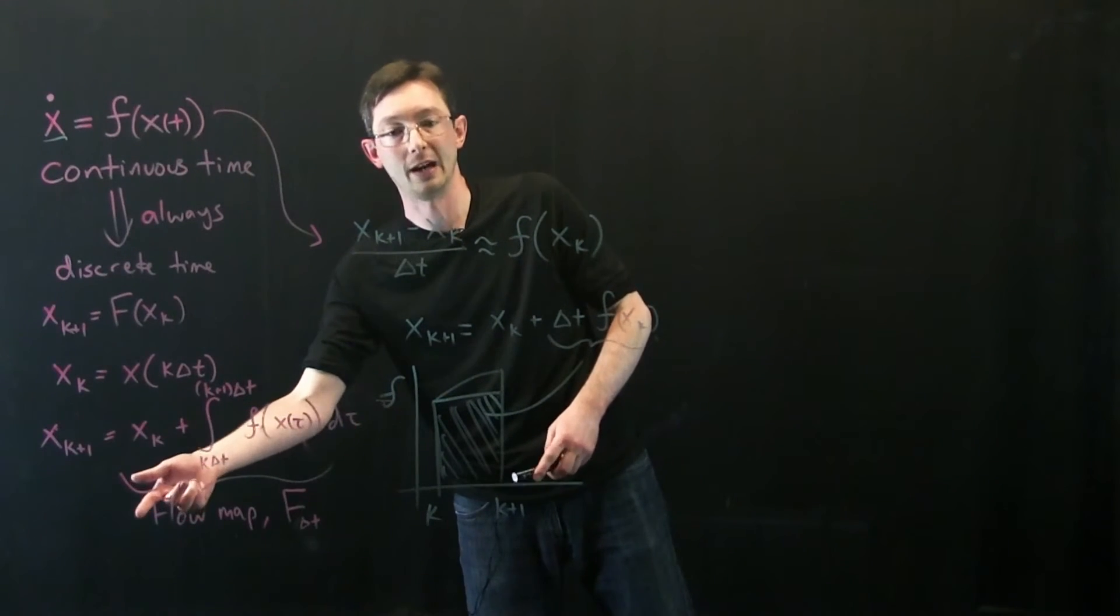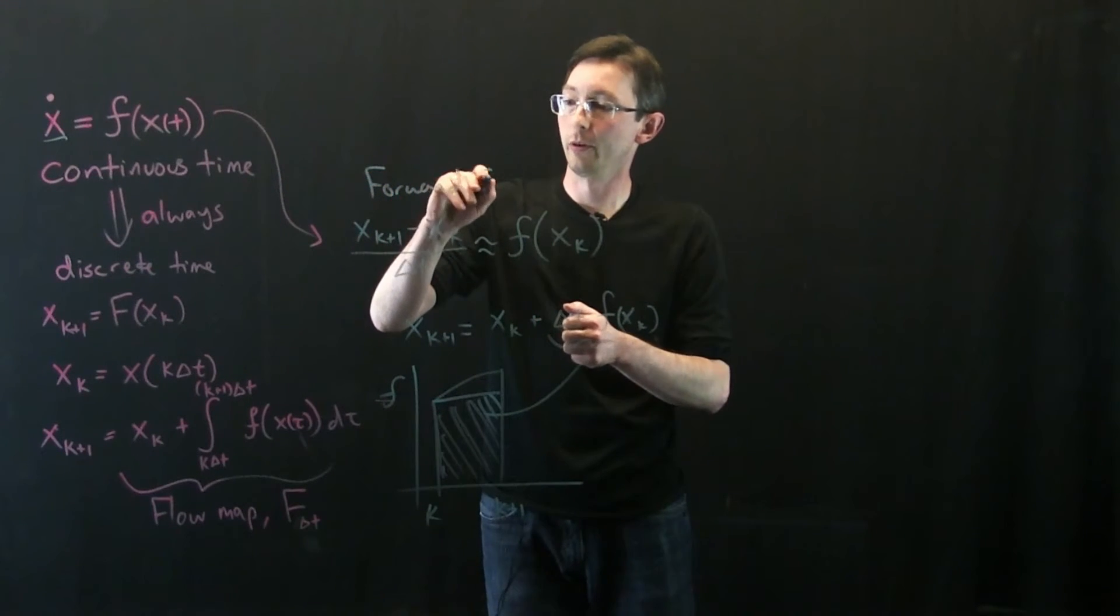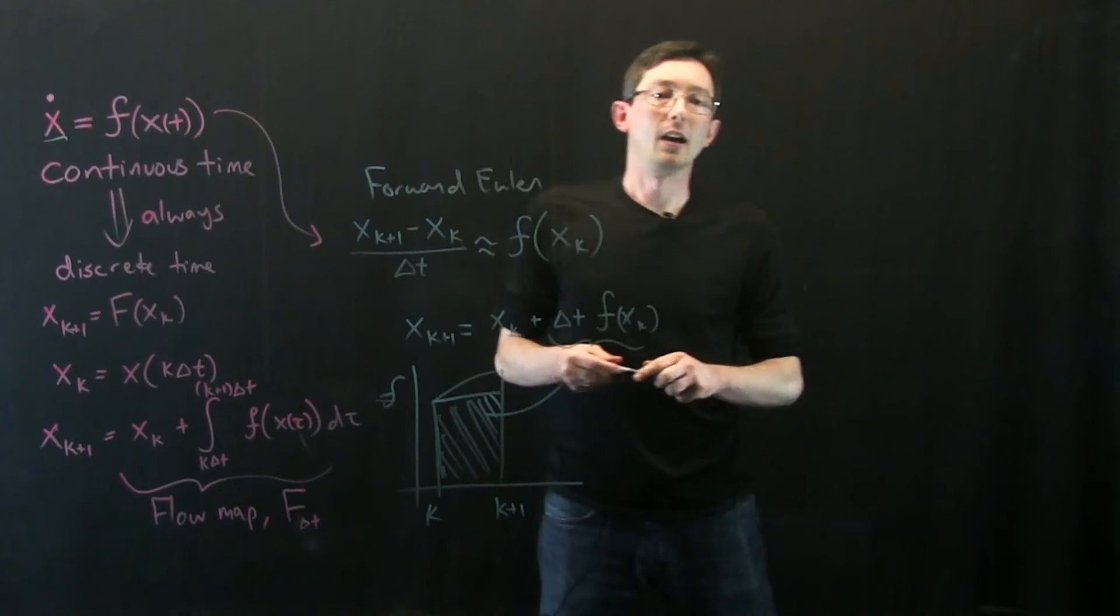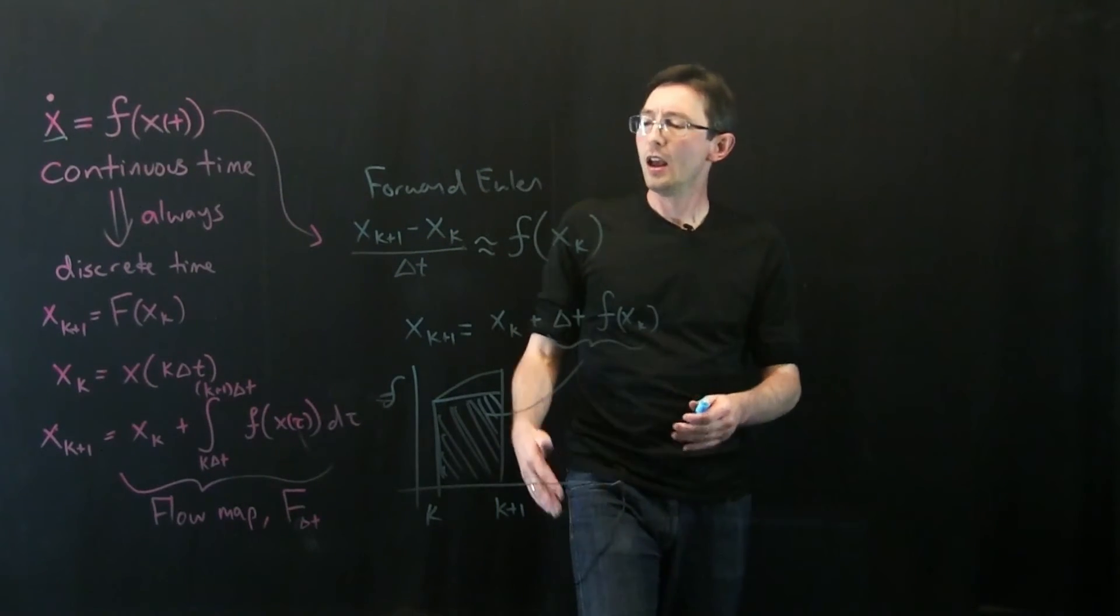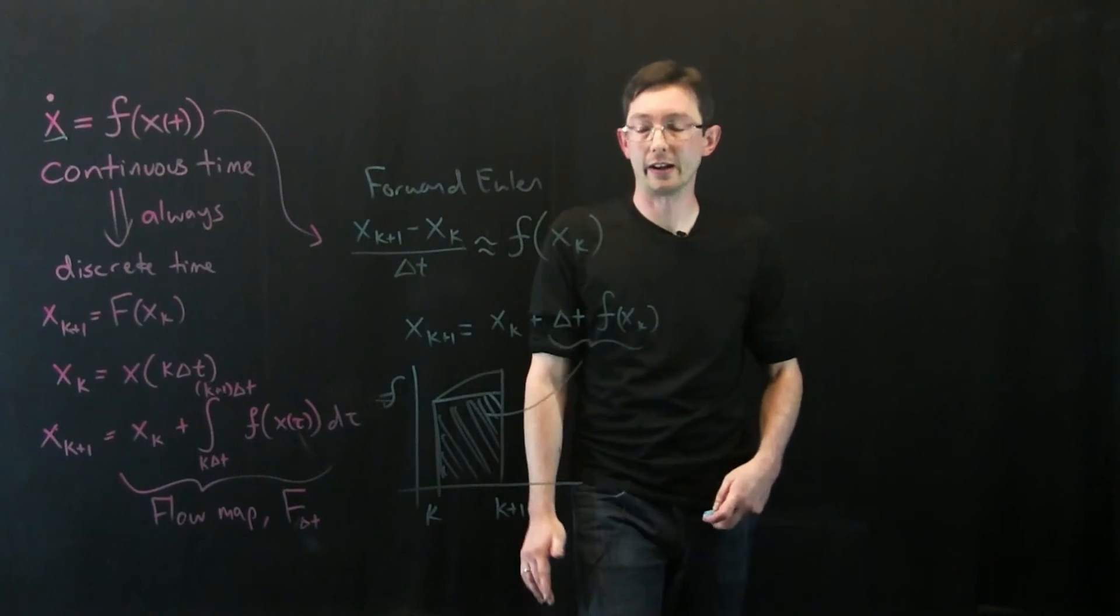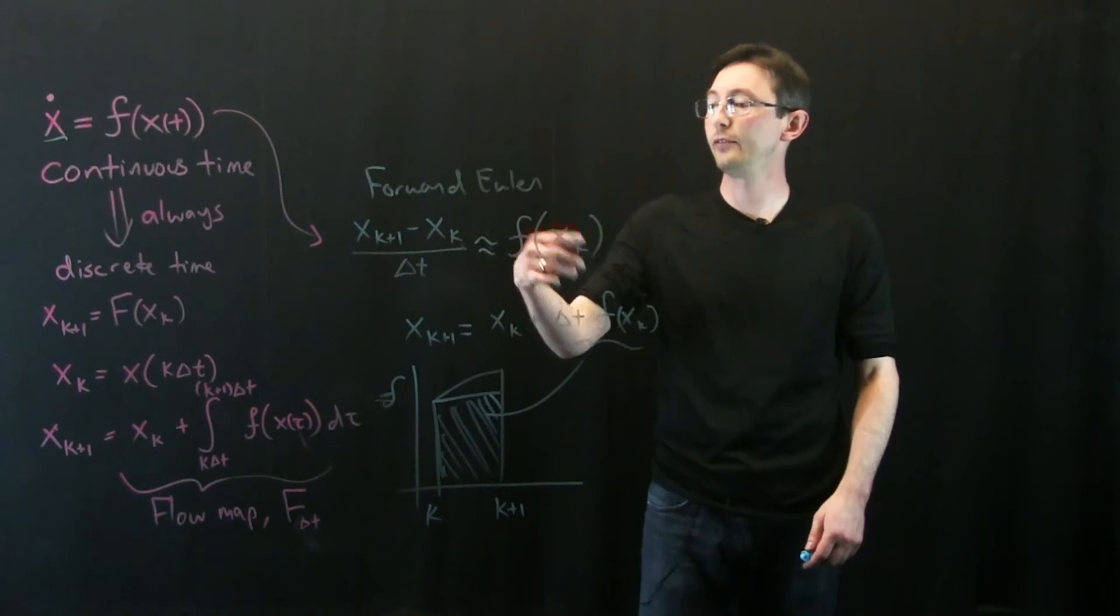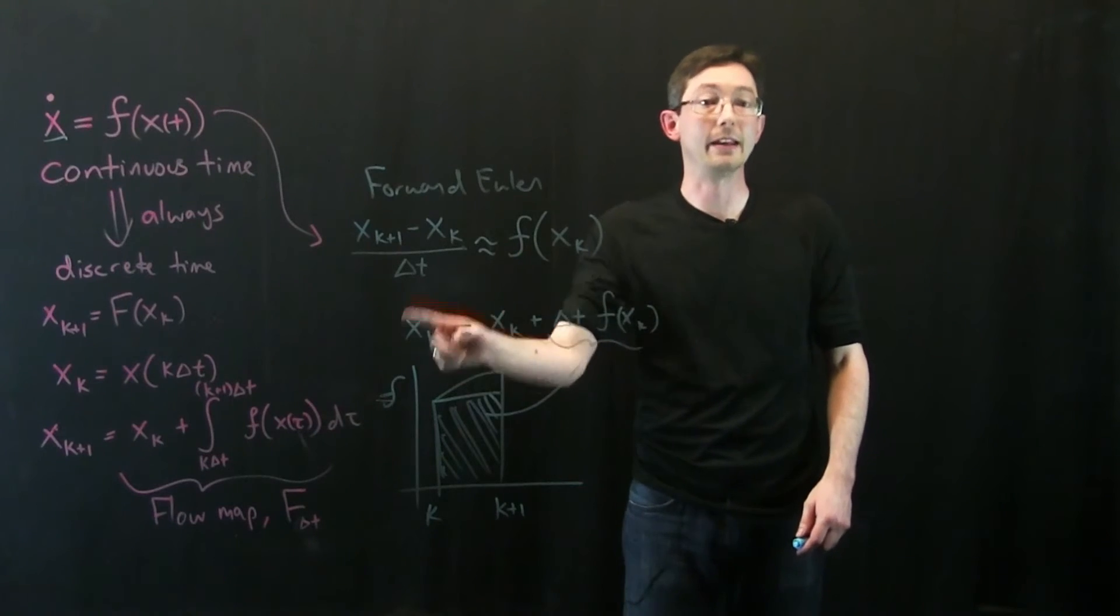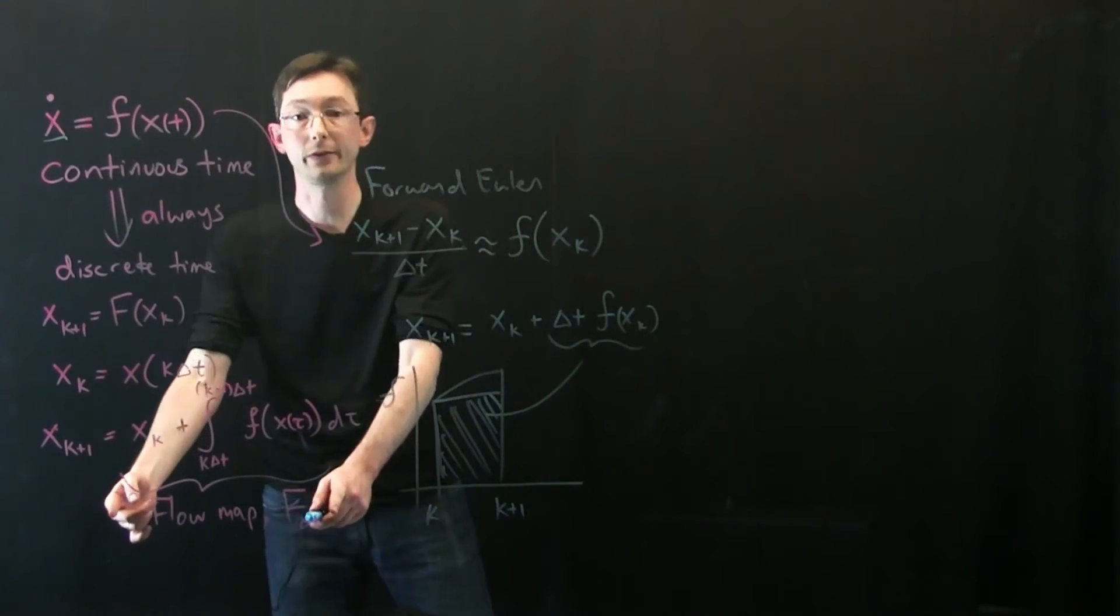So there is a true flow map and forward Euler, this is a forward Euler integrator, is basically just doing an approximation of that flow map. So this is kind of the crudest simplest thing you would code up if you wanted to simulate a dynamical system is you'd basically just make this approximation for the derivative you'd multiply by delta t add x k and now you have an integrator. And this is crudely approximating this flow map.